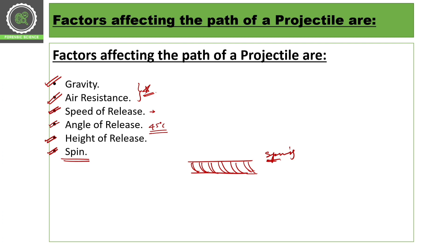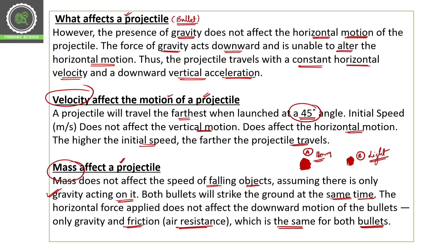So these are some factors which affect the path of projectiles: first is gravity, then we have air resistance, then speed of release, then angle of release, height of release, and spin. These are all very important factors. We have discussed three important things here.